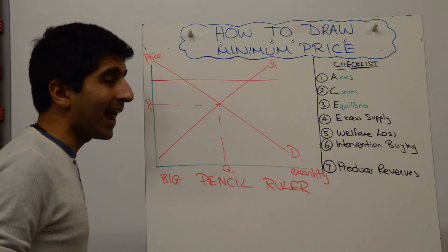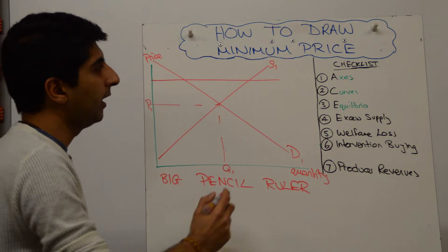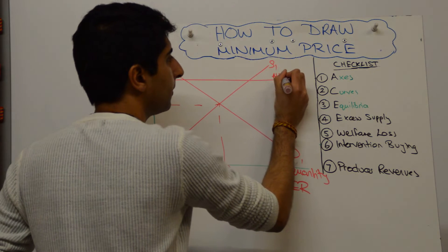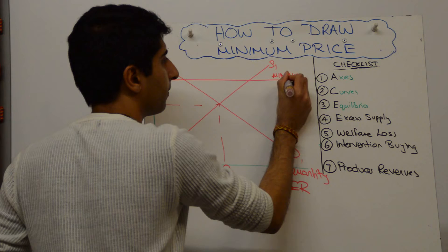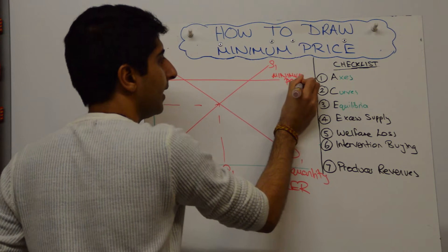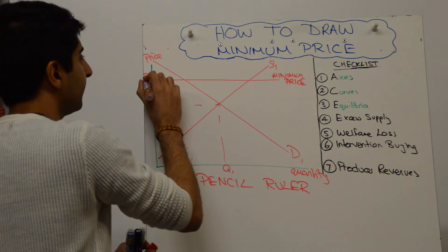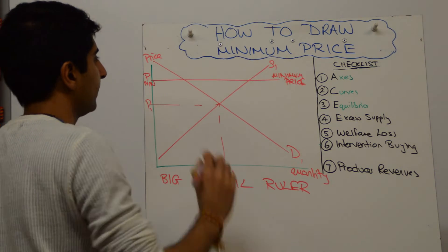So draw it as a flat line going across here. You can label it here as minimum price, but certainly you must label it on the axis as P mid, like that, it's fine.